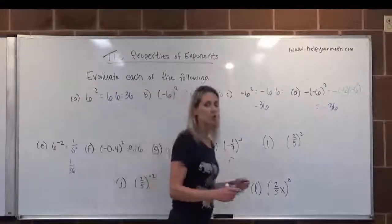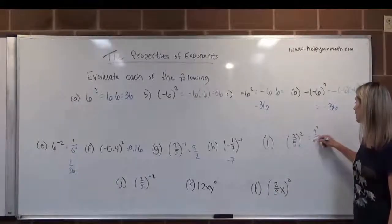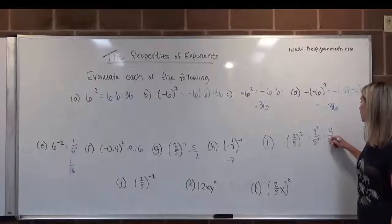Letter I, 2 fifths squared, so we want to distribute the exponent. So that would be 2 squared over 5 squared, which would be 4 over 25.